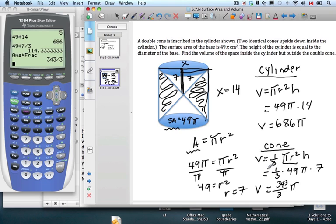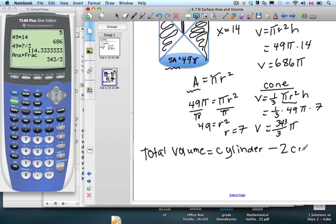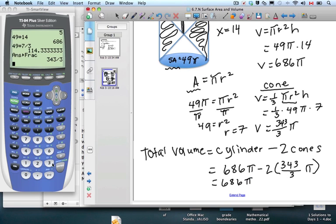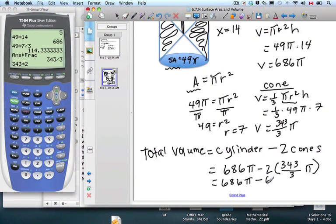So now we have the volume of cone and the volume of a cylinder. So now we have two cones, though, that we have to consider. So the total volume between the two is going to be the volume of the cylinder minus two cones. Now let's just substitute in what we know. Cylinder is 686 pi, and minus two times 343 over 3 pi. So I have 686 pi.